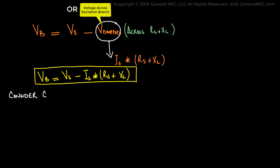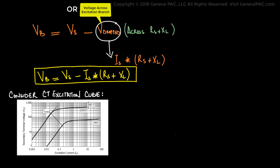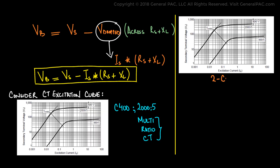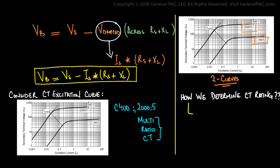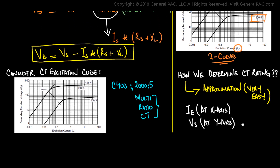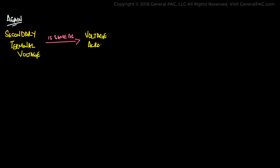Now let's consider an example of a CT excitation curve. The excitation curve shown here is for a C400 2000-to-5 multi-ratio current transformer. We see that it's multi-ratio because there are two curves — one representing 2000-to-5 and another representing 300-to-5. To determine the CT rating, we look at the excitation current on the x-axis and the secondary terminal voltage Vs on the y-axis. The secondary terminal voltage is the same thing as the voltage across the burden, which is a really important parameter.